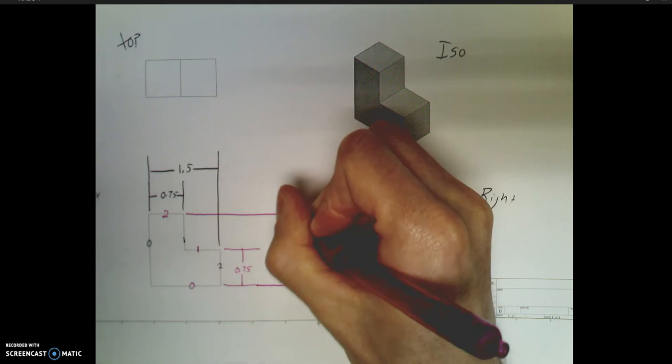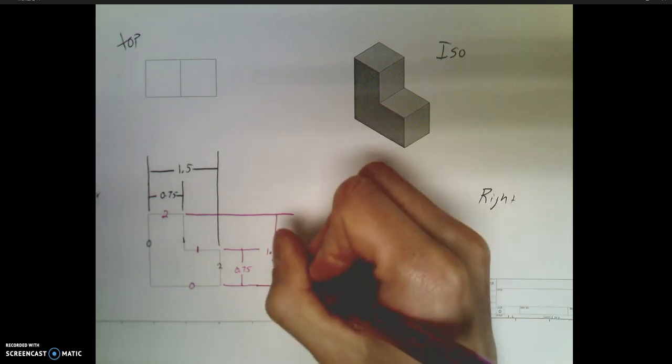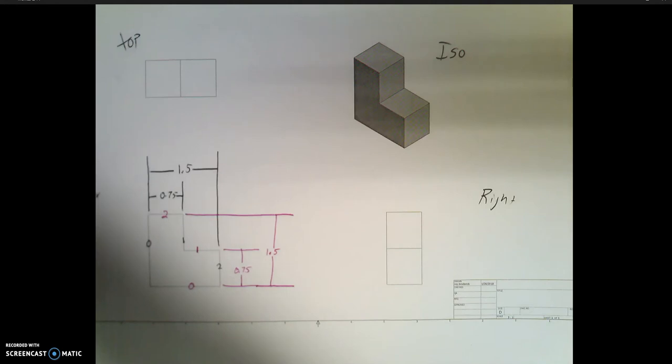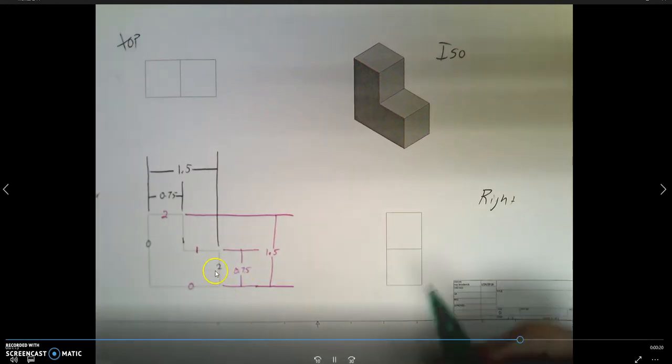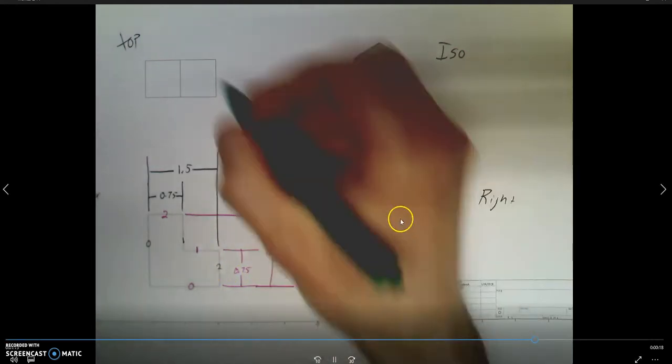So from 0 to 1, we put on our extension lines, closest one, smallest one. Go from 0 to 2 on our heights, noticing that these heights match that same height.